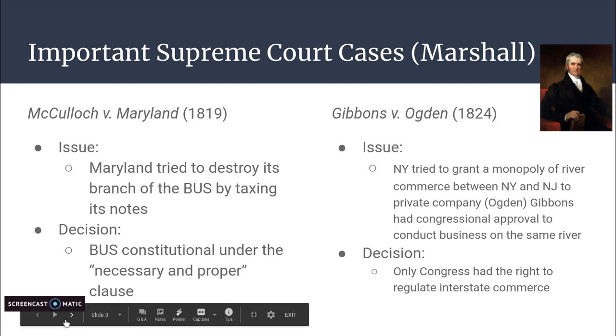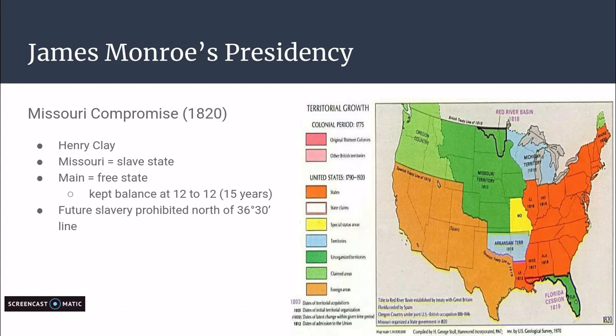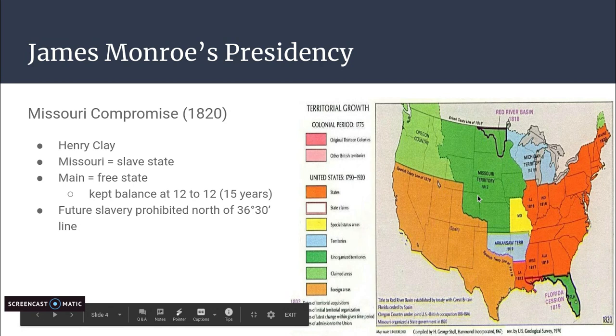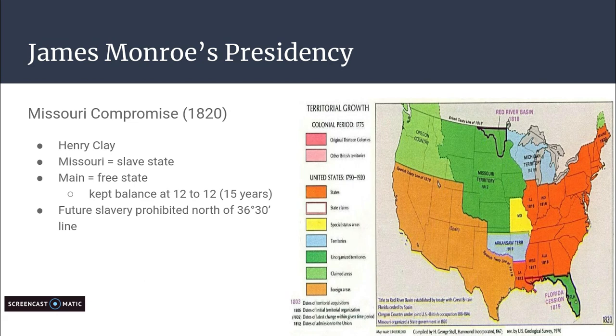The three most impactful events of James Monroe's presidency: The first is the Missouri Compromise of 1820, actually proposed by Henry Clay. In the Missouri Compromise, Missouri entered the United States as a slave state and Maine entered as a free state. It kept a balance of 12 free states and 12 slave states, and this balance held true for 15 years.